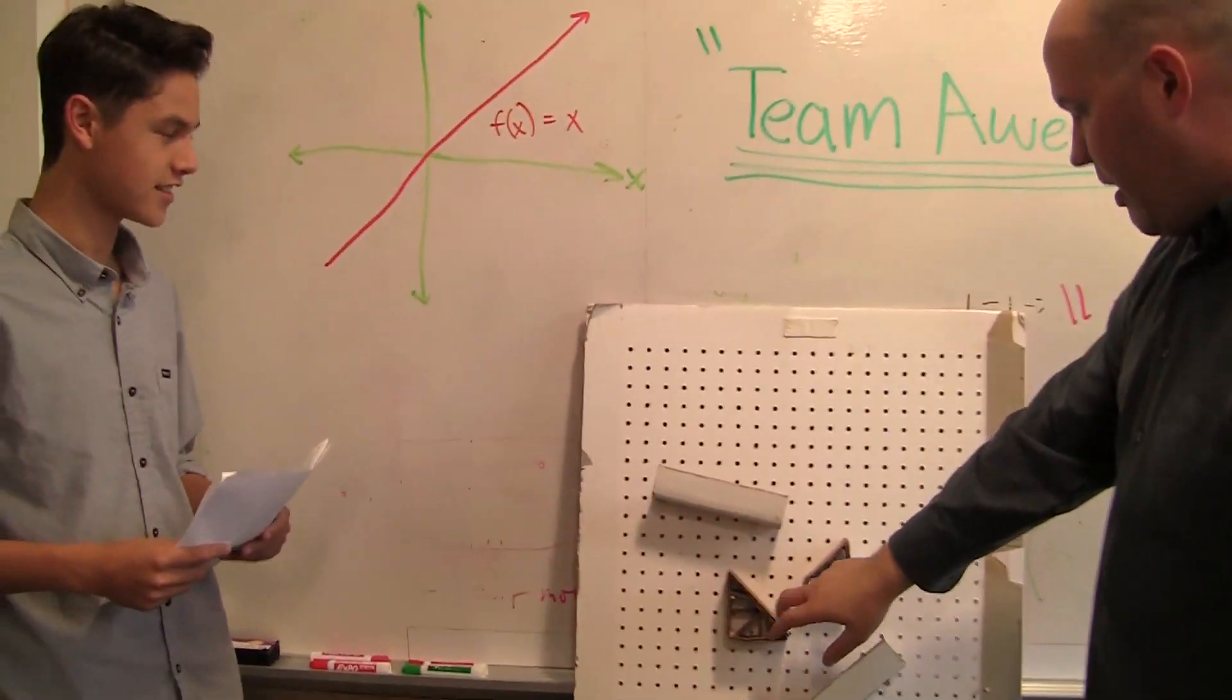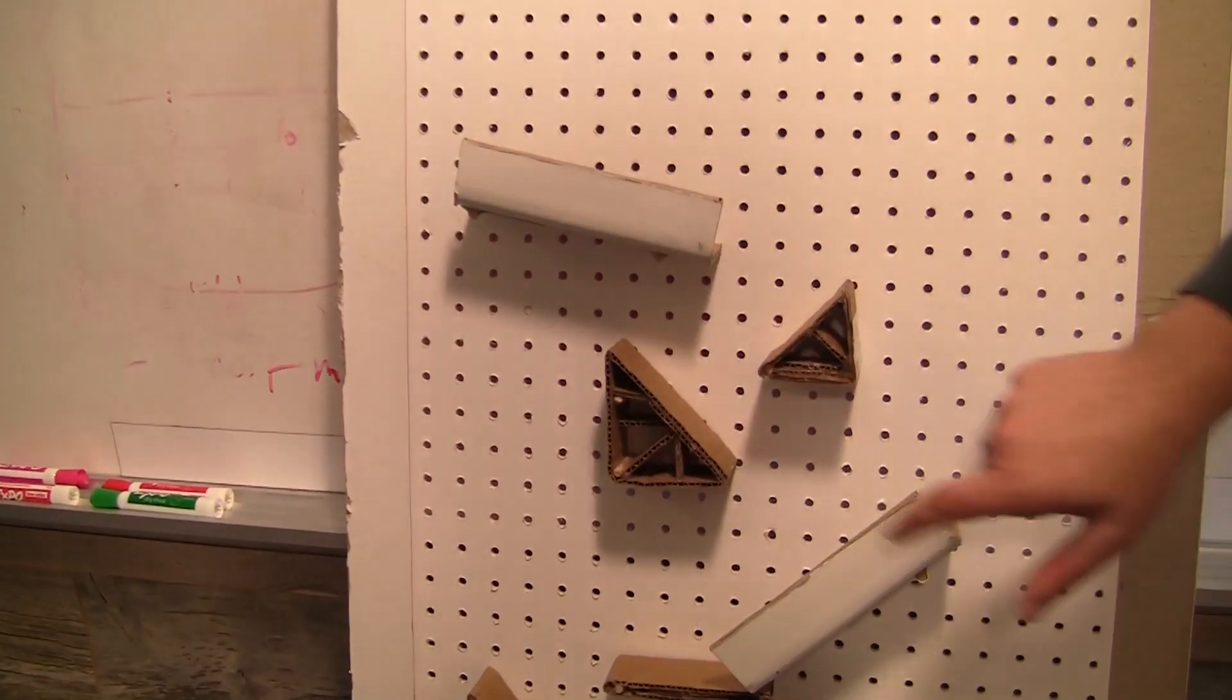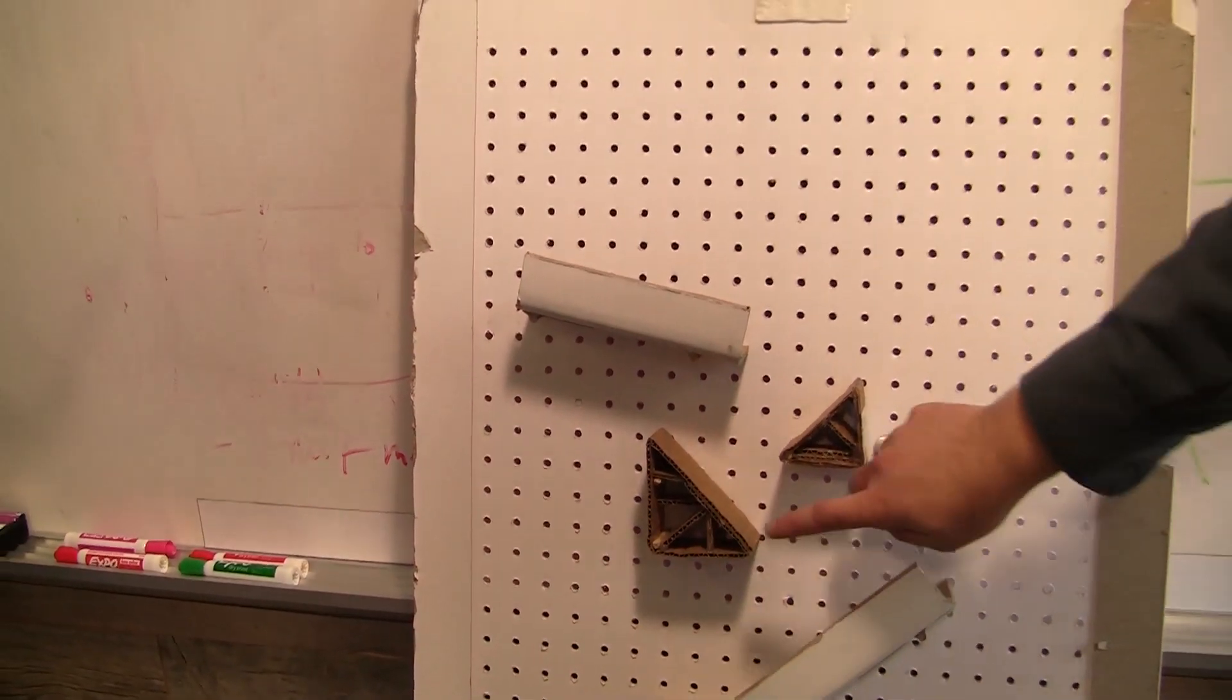This angle here, we said that this was 3 down and 3 over, so as a triangle, if I looked at this just as a triangle, what's this angle right here?